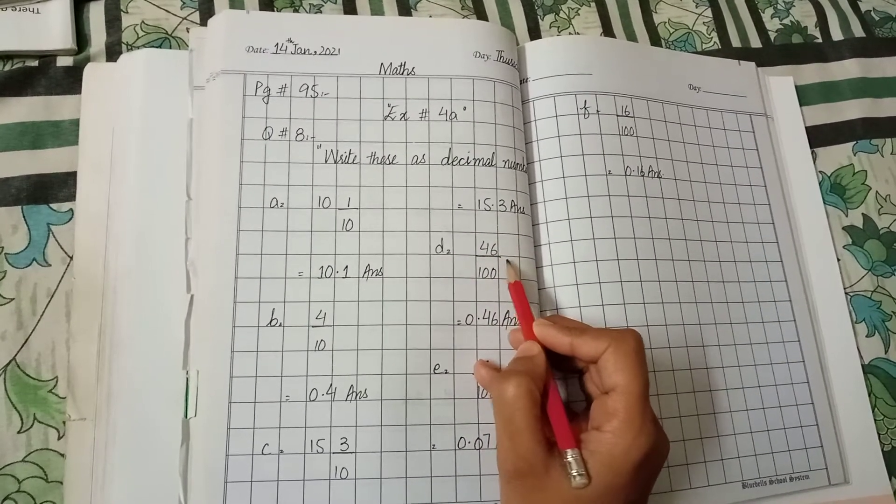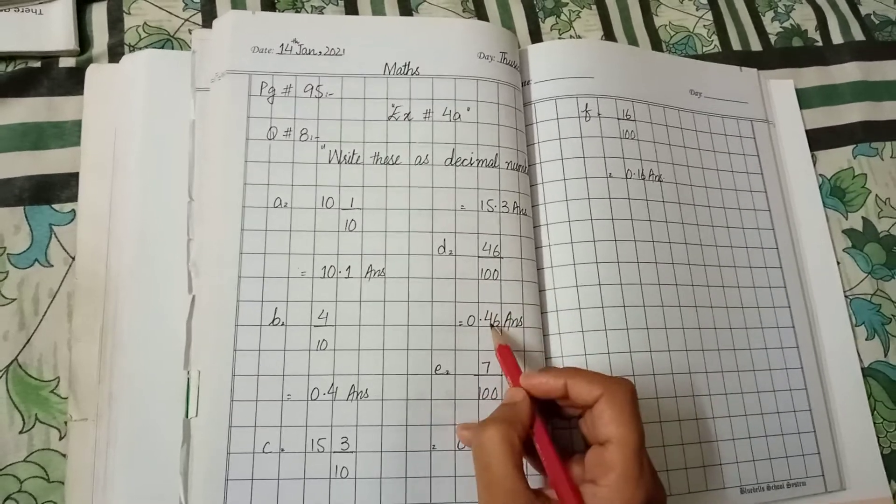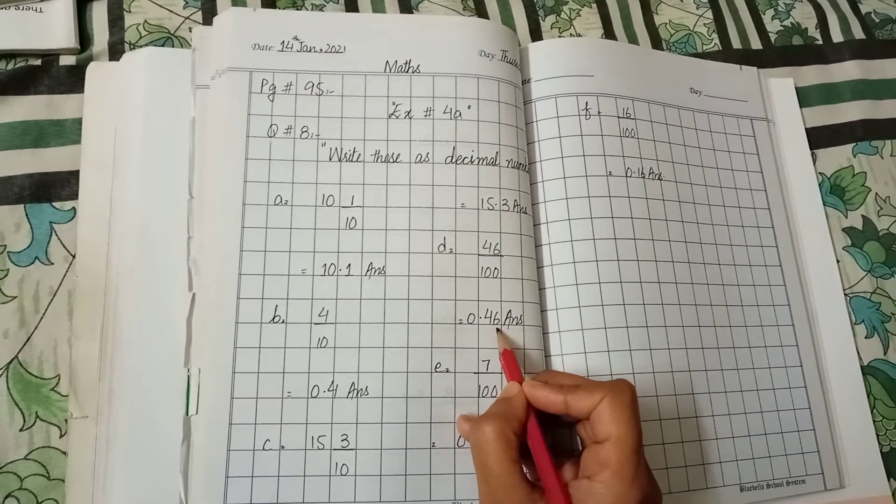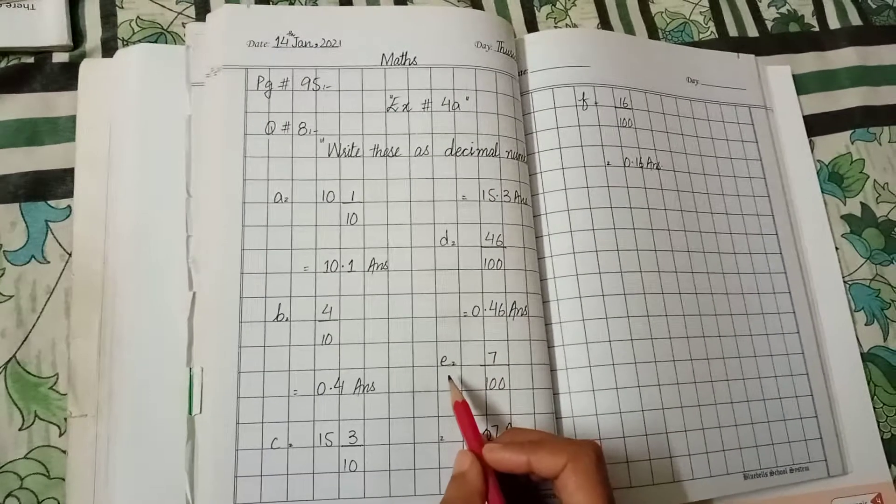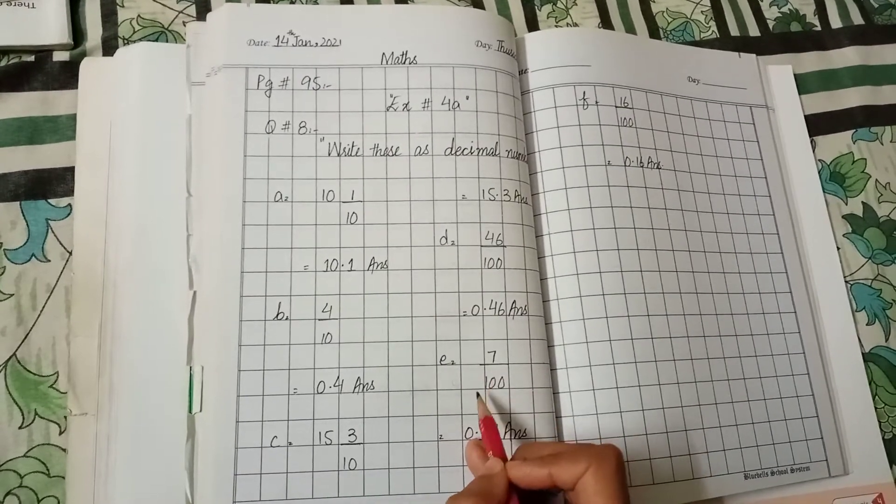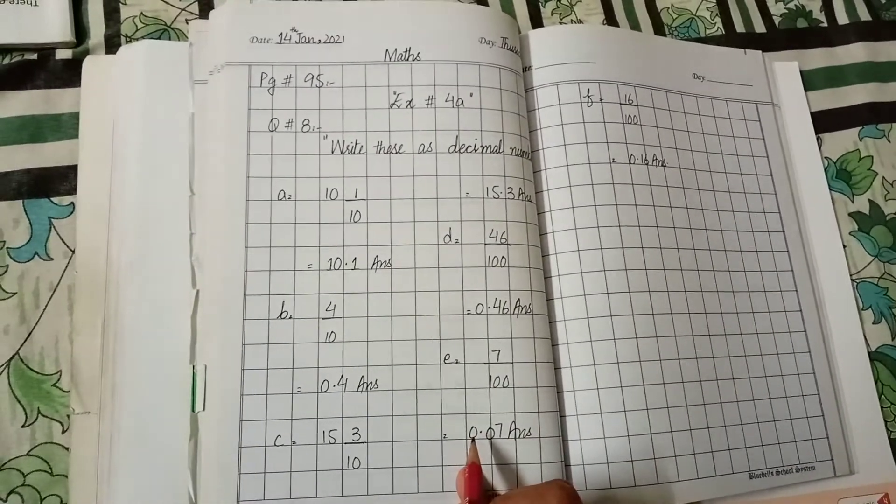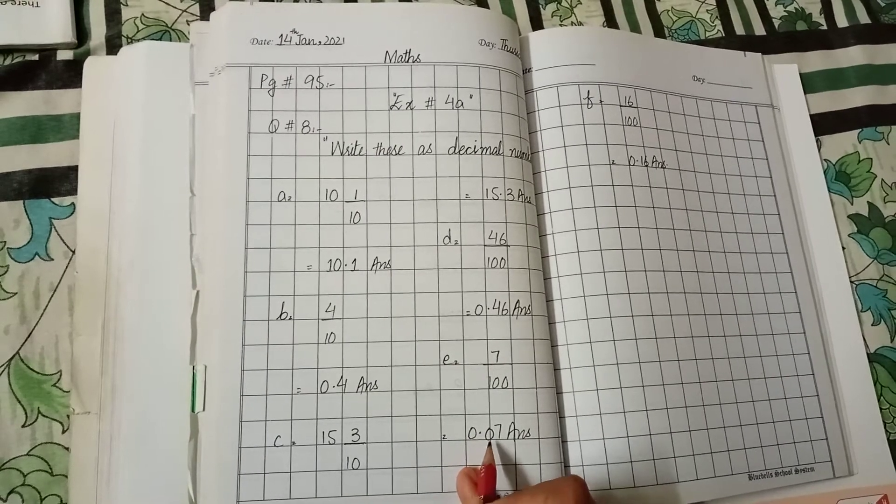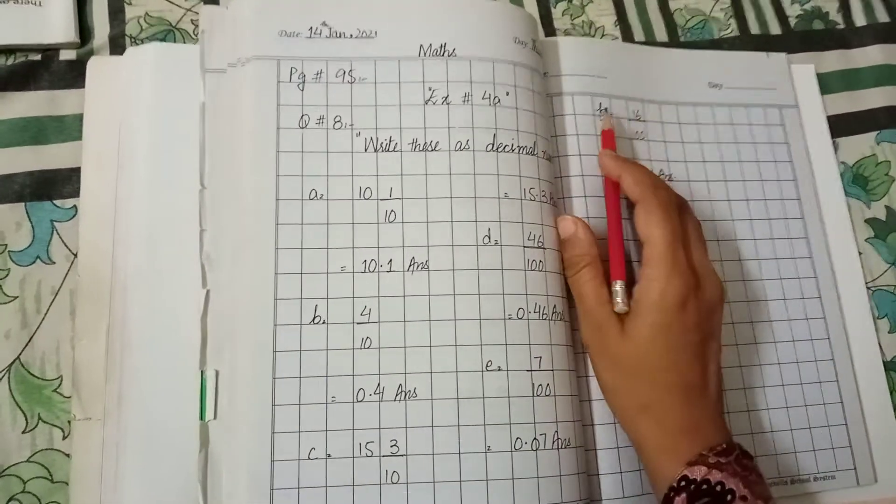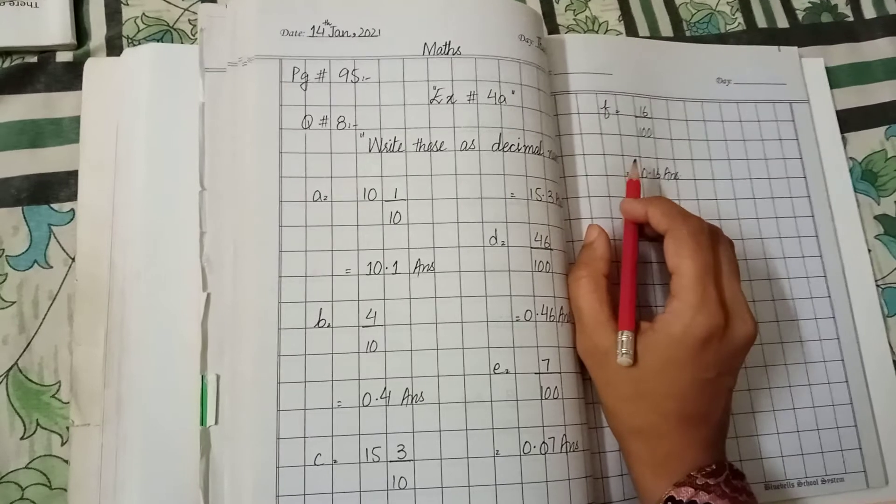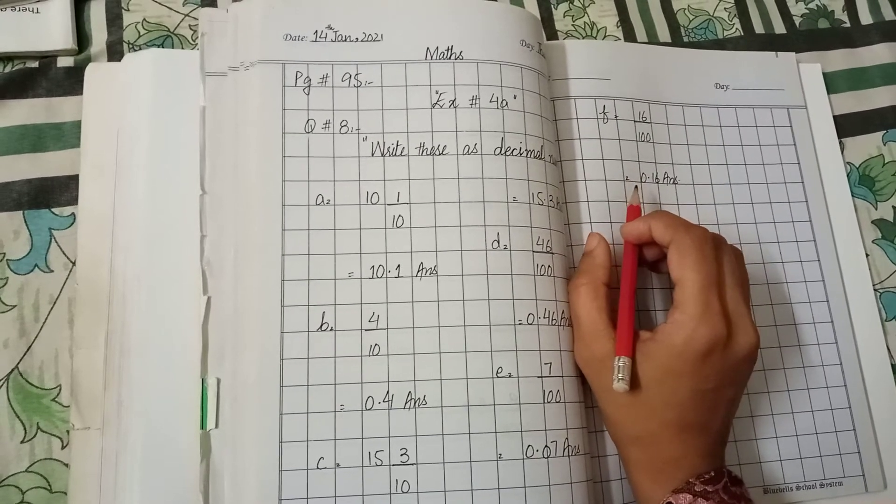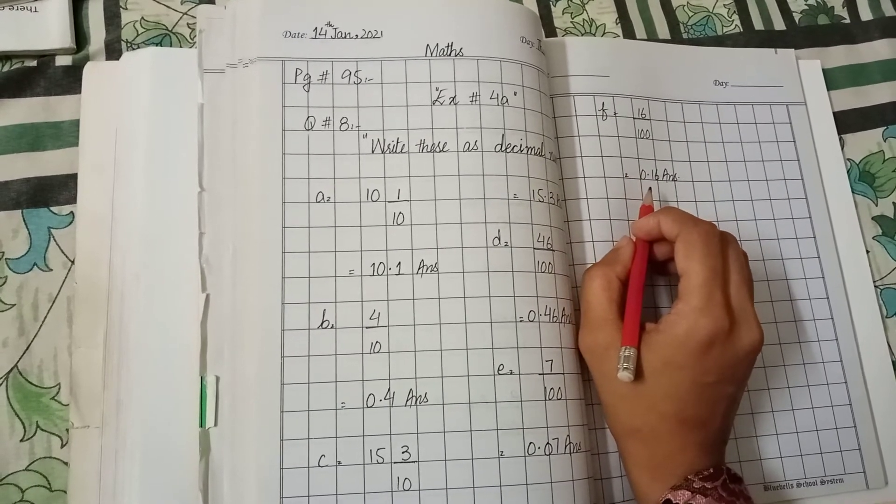D part is 46 divided by 100 and the decimal form is 0.46. Now E part is 7 by 100 and the decimal form is 0.07. F and last part is 16 by 100 and the answer is 0.16.